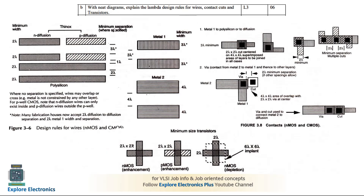The second question: explain lambda-based design rules for wires, contact cuts, and transistors with necessary diagrams. For wires we consider diffusions, polysilicon, and metals. For N-diffusion the minimum width should be 2 lambda, and for P-diffusion also 2 lambda. Spacing between two N-diffusions should be 3 lambda, and between two P-diffusions 3 lambda. If polysilicon comes between a diffusion, the spacing should be 1 lambda. For polysilicon, minimum width is 2 lambda and spacing between two polysilicon layers is 2 lambda.